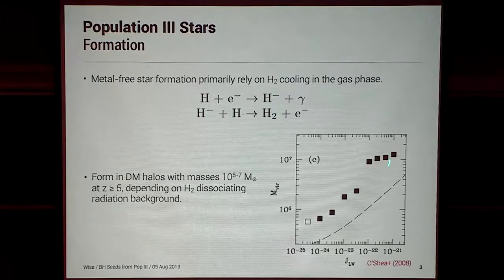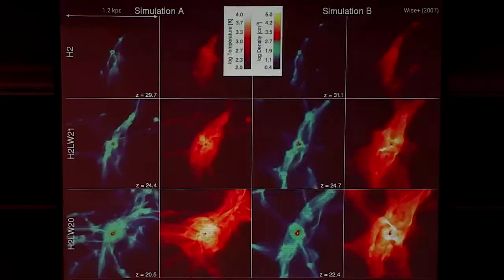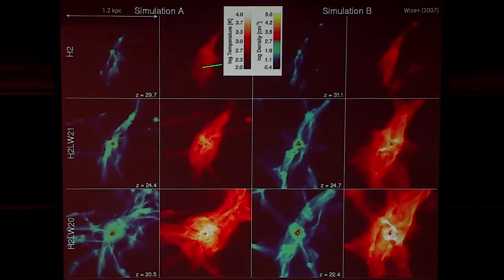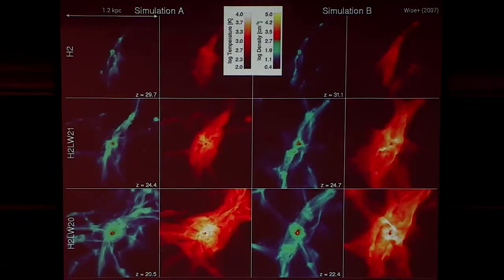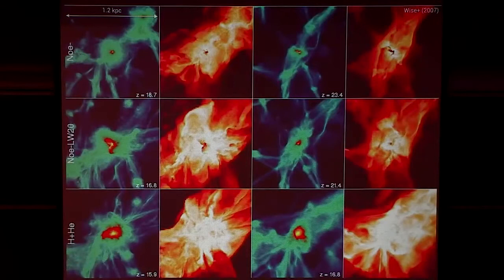To put this into visual terms, we can look at density projections and temperature projections. This top case is with no radiation feedback. With some Lyman-Werner background around 10^-22 J, the halo is around a million solar masses. If you increase the Lyman-Werner background by another order of magnitude, you need larger and larger halos to support H2 cooling to form a Population III star. The higher the soft UV background, the more massive the halo you need.